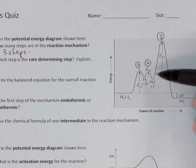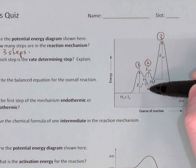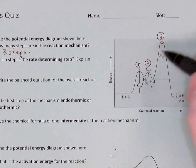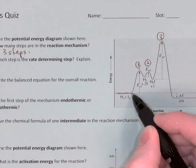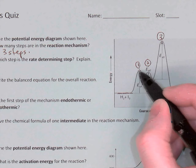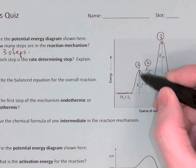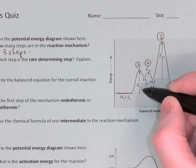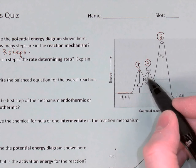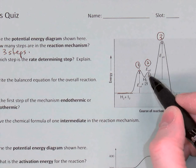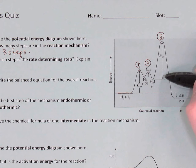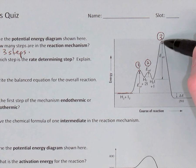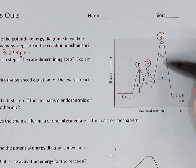I'm looking for the reaction step that has the largest activation energy. The activation energy for step one: the reaction started at a certain potential energy here and went to an activated complex at the top of that hill, so that arrow — EA number one — is the first activation energy. The second step started here, and its activated complex is at the top of the second hill, so it has a very small activation energy. The third step starts here and goes to the top of this hill, where there's a third activated complex, and that's its activation energy for step three.